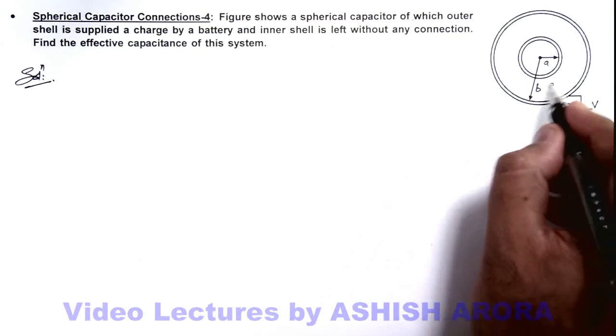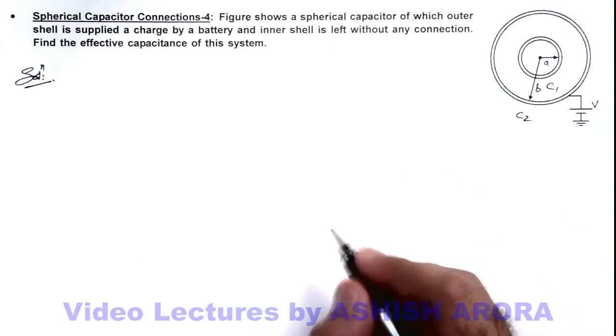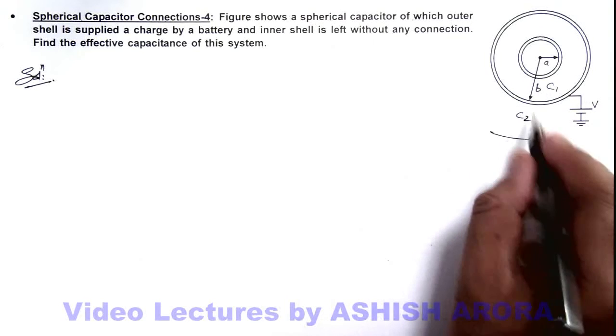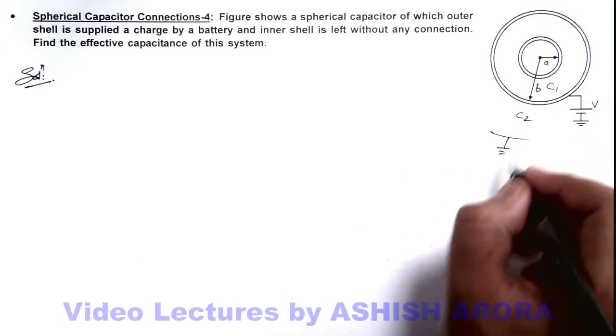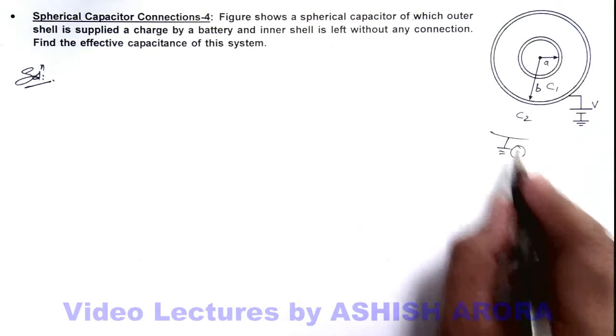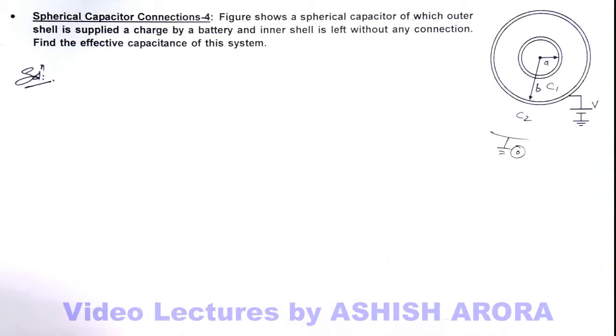Here again we can see there are C1, C2, two capacitors. We can assume the outer plate of C2 is connected to earth, as it is at infinity at zero potential.